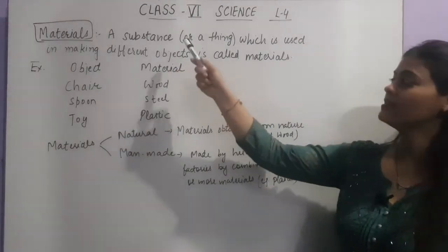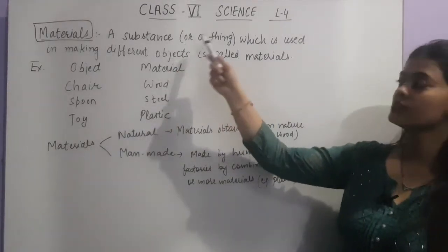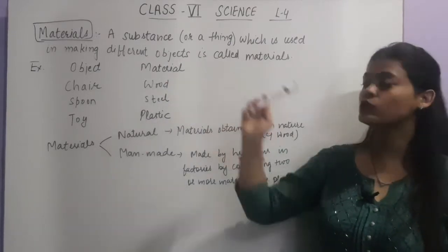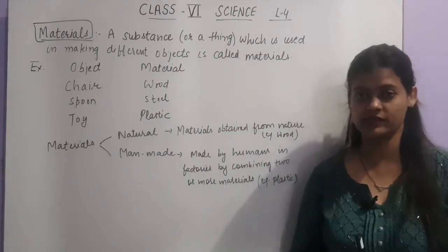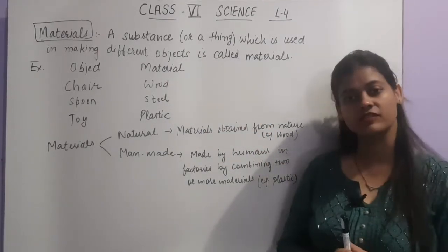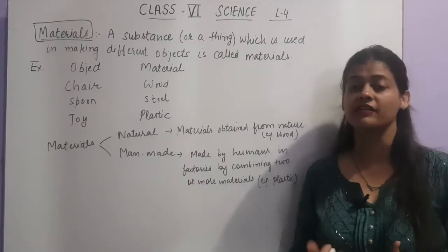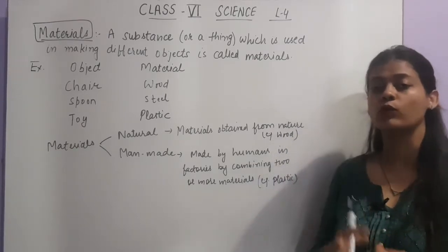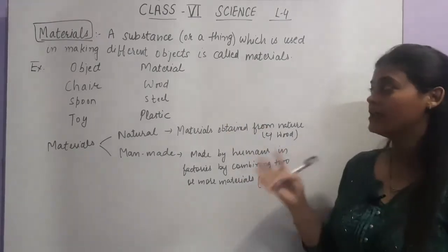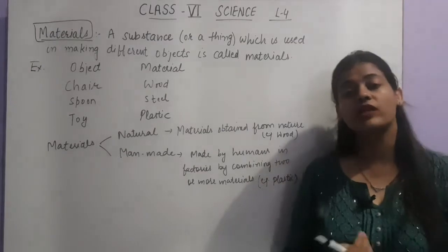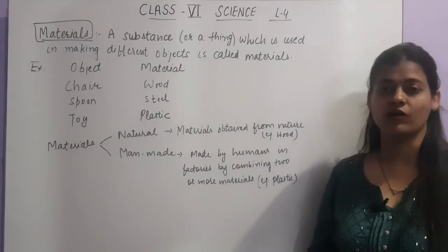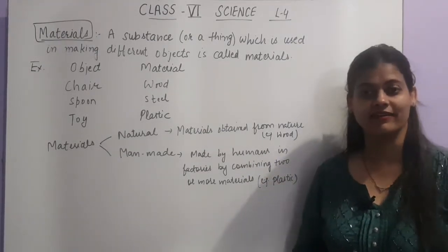Material is a substance or a thing which is used to make different objects. An object — as we discussed in the previous video — is anything that you can hold or touch. So anything which is used to make an object is called a material.